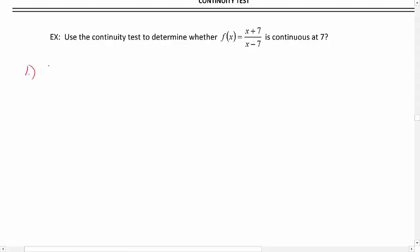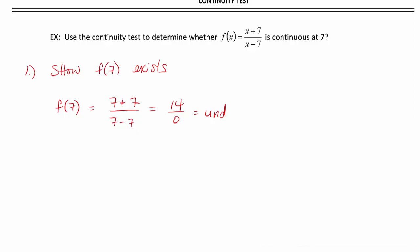The first thing we want to see is show f of 7 exists. So we'll plug in f of 7 is going to be 7 plus 7 over 7 minus 7. We're getting 14 over 0, which is undefined. Well, if we get an undefined answer, then that means that it doesn't exist.